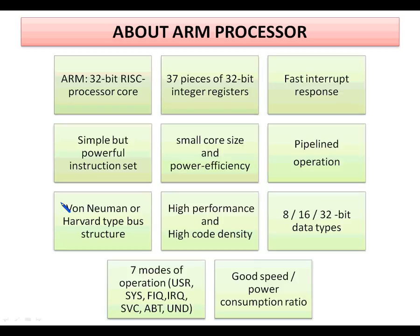The ARM core uses either a von Neumann or a Harvard style architecture. In von Neumann architecture, both data and instructions use the same bus — ARM7 uses this type of architecture, which has a 3-stage pipeline. Harvard architecture uses a separate bus for data and instructions, which increases the speed of the processor by employing a 5-stage pipeline used in ARM9. ARM can be operated under two states: either ARM mode or Thumb state. Using ARM state achieves higher performance, while Thumb state increases code density.